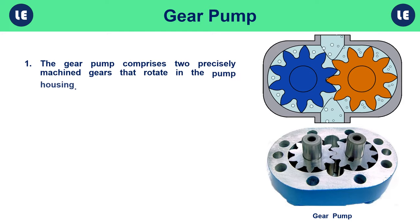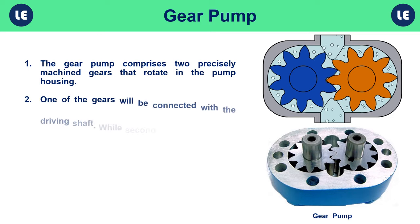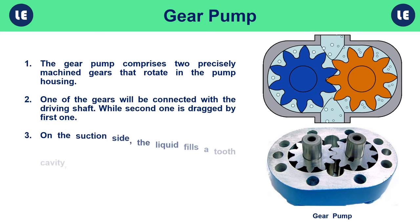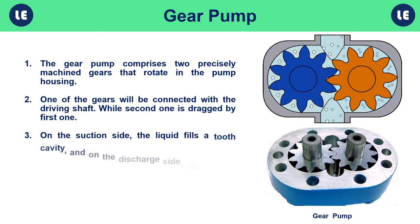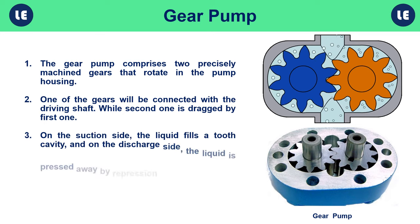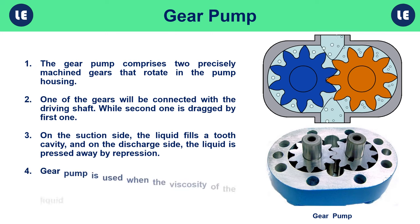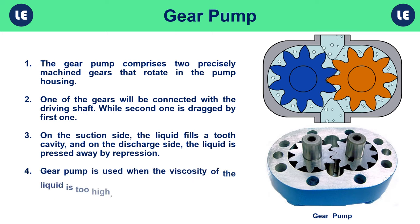The gear pump comprises two precisely machined gears that rotate in the pump housing. One gear is connected to the driving shaft while the second is dragged by the first. On the suction side, the liquid fills a tooth cavity, and on the discharge side, the liquid is pressed away by repression. Gear pumps are used when the viscosity of the liquid is too high.